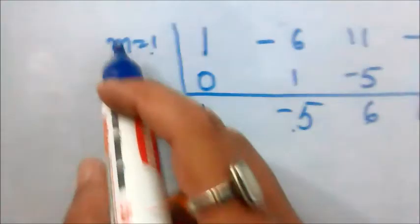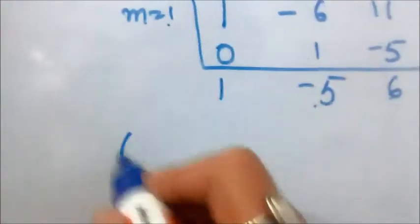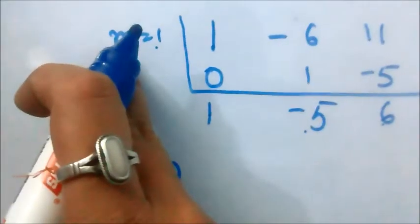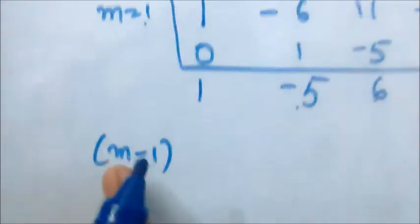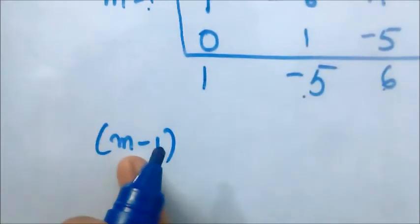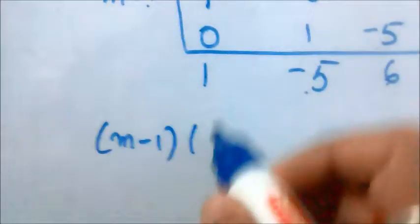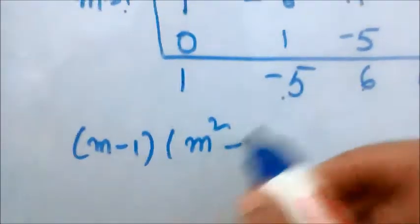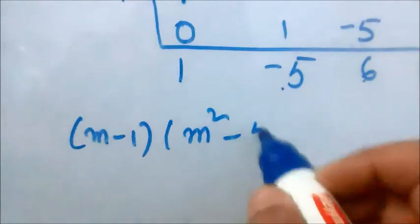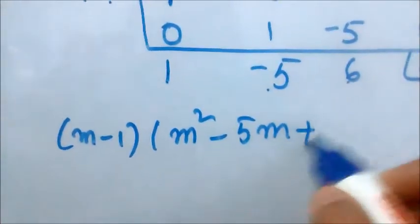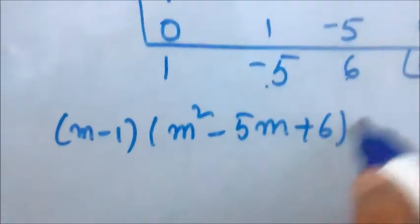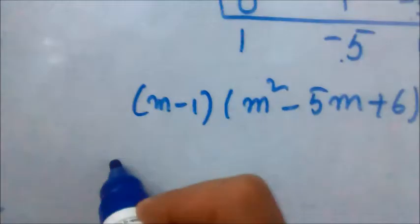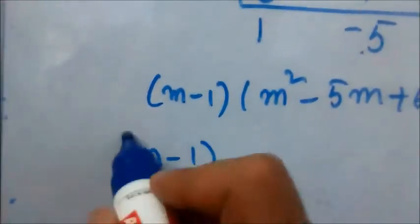So I can write this as (m - 1) times the remaining quotient. We write (m - 1) and the remaining factor as m² - 5m + 6 = 0.